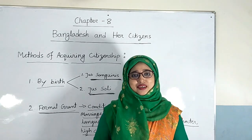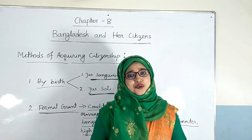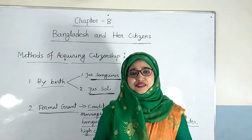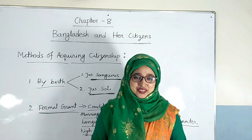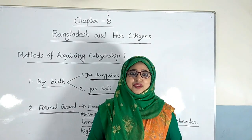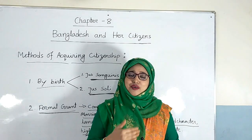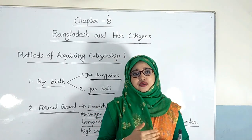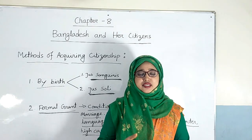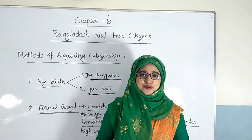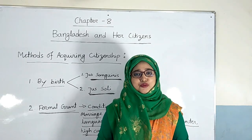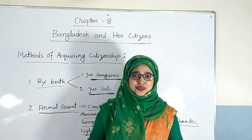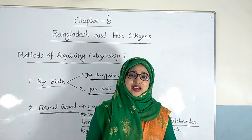Now I am going to discuss dual citizenship. Having citizenship of two countries is called dual citizenship. For example, our national poet Kazi Nazrul Islam was a citizen of India. At the same time, he was also made a citizen of Bangladesh. Bangabandhu Sheikh Mujibur Rahman gave him citizenship in 1974. So he had dual citizenship.